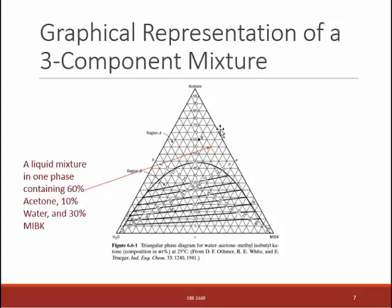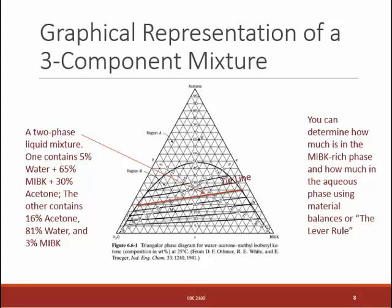Pause the video and make sure that when you see this point right here, you can tell that that's 60% acetone, 10% water, and 30% MIBK. Now let's look at one in the two-phase region. This point right here is on a tie line. The tie line tells me the compositions of the two phases. This phase over here is about 5% water and 65% MIBK, with the remainder being acetone. This point over here is about 81% water, 16% acetone, and about 3% MIBK.